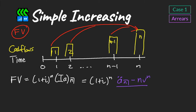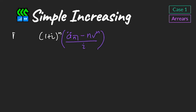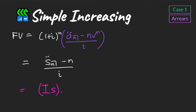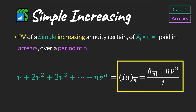We simplify further by writing out the terms and multiplying through by (1 + i)ⁿ. This gives us new formulae, which we denote as (Is)̈ₙ — the future value of an increasing annuity paid in arrears.